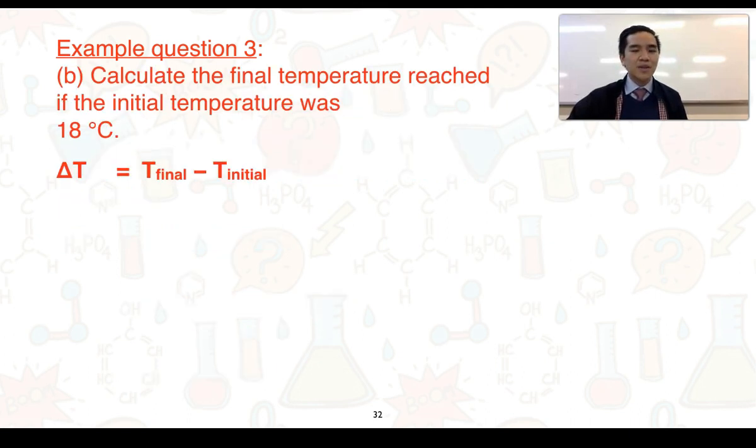In part b, calculate the final temperature reached if the initial temperature was 18 degrees Celsius. Considering the temperature change is essentially the difference between the final and initial temperature, if we are trying to calculate the final temperature we can rearrange this equation and we get that Tfinal equals ΔT plus Tinitial.